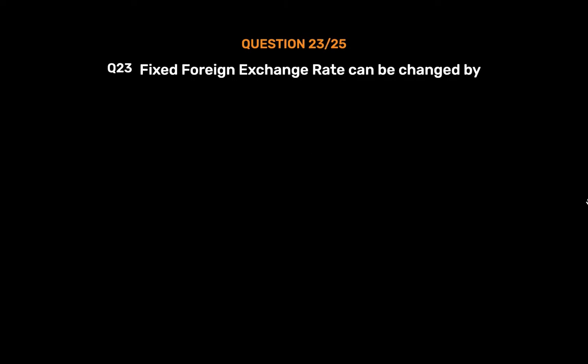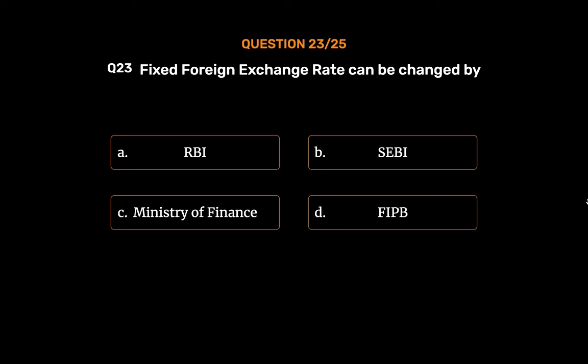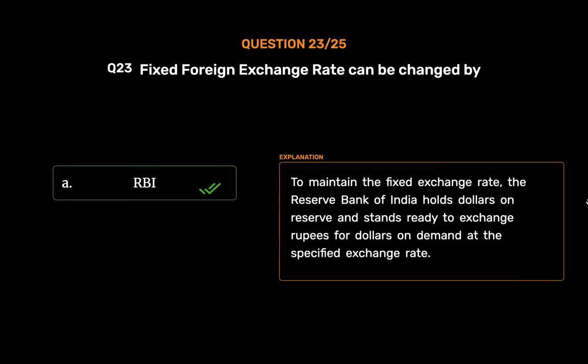Question No. 23. Fixed foreign exchange rate can be changed by. Option A: RBI. Option B: CBI. Option C: Ministry of Finance. Option D: FIPB. The correct answer is Option A: RBI. To maintain the fixed exchange rate, the Reserve Bank of India holds dollars on reserve and stands ready to exchange rupees for dollars on demand at the specified exchange rate.